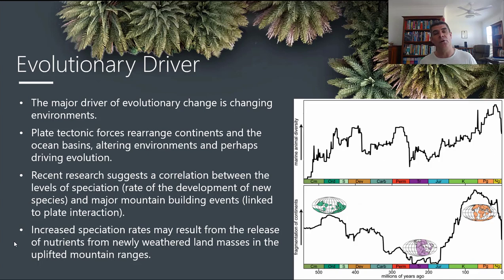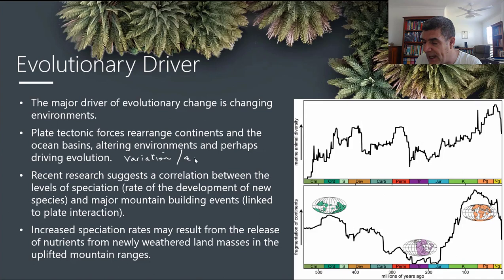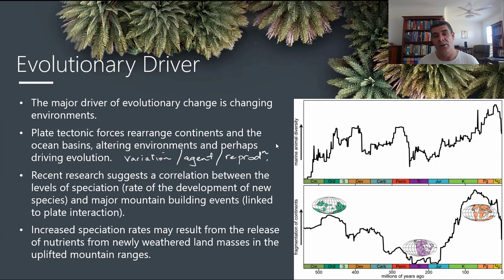Plate tectonic forces rearrange continents and ocean basins, and they alter these environments. The three key things we know about evolution are: variation, a selecting agent — something that acts on a population — and reproduction. Reproduction is what allows individuals who've been better suited to whatever the selective agent was to pass that selective advantage on to future generations.